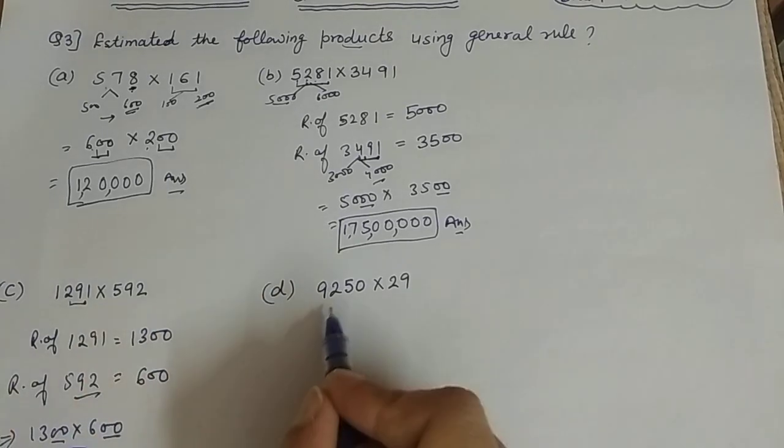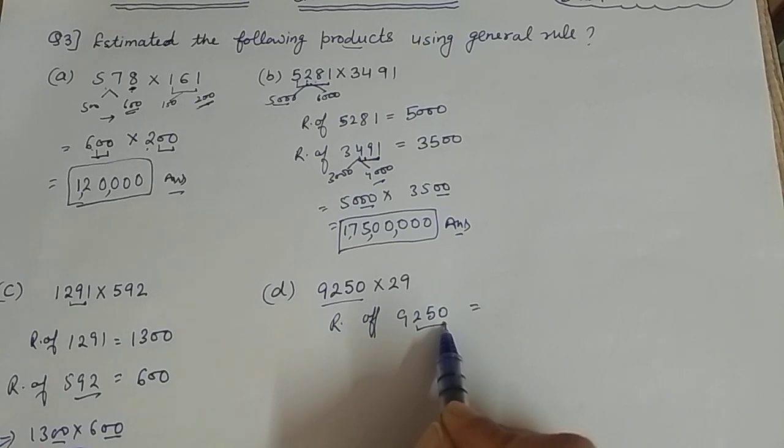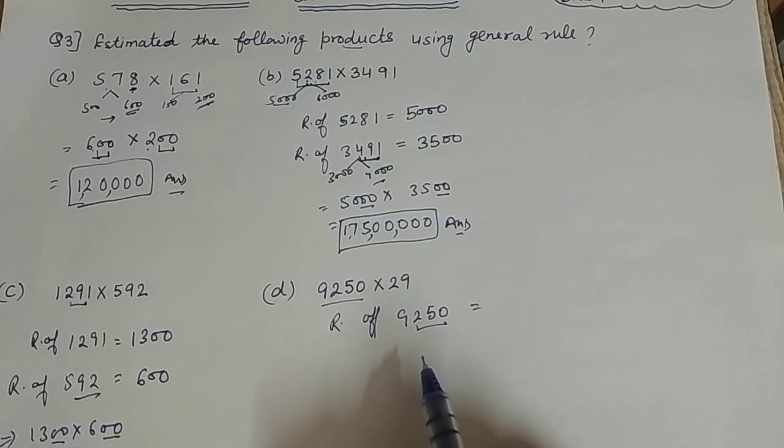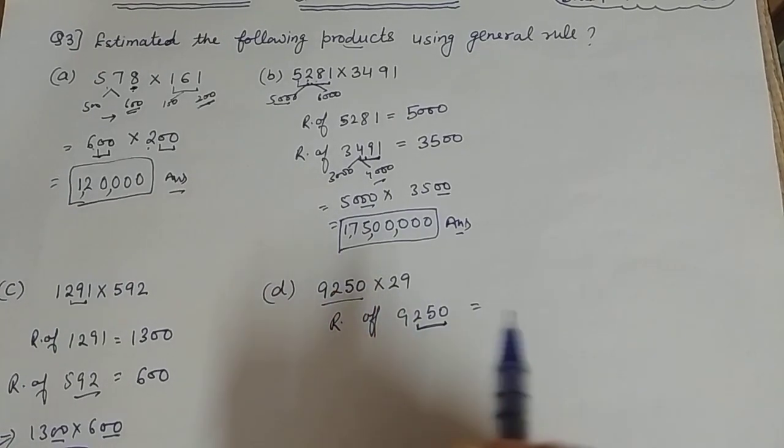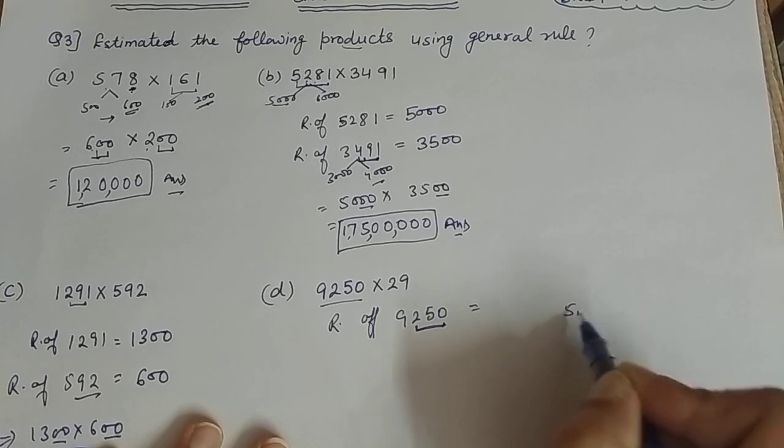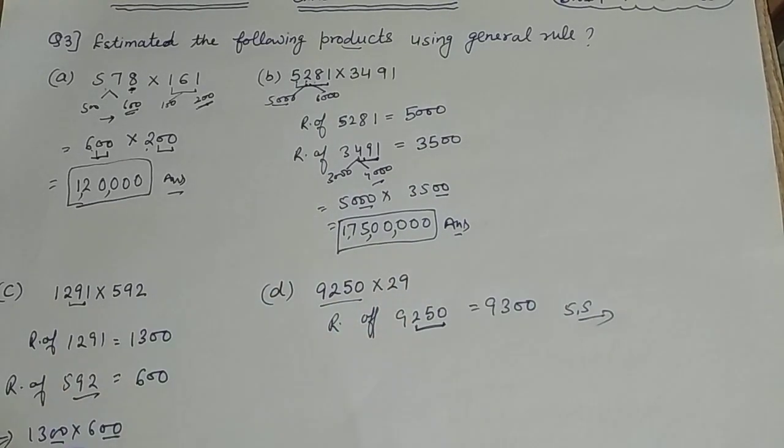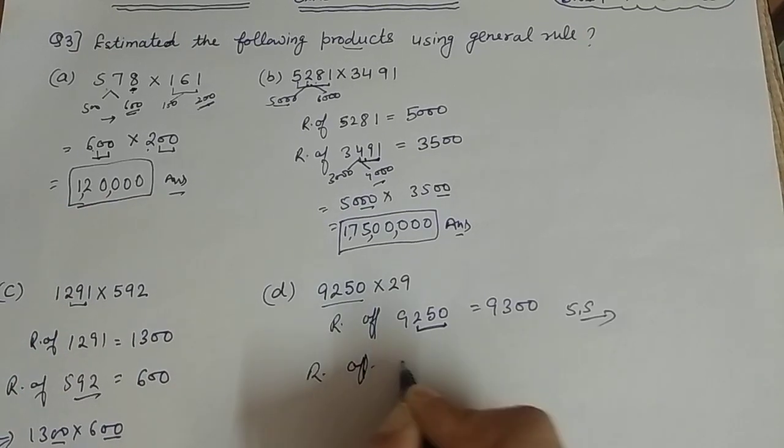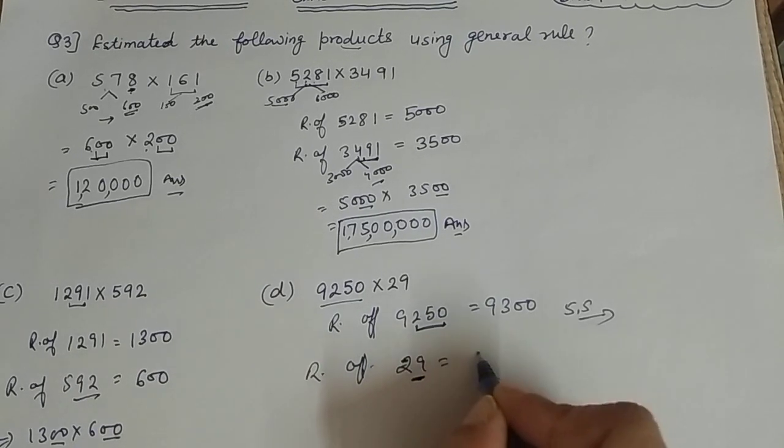Next, part D, we will round off 9,250. This is 250 or 500, it will go to 200 because it's more close. In thousands, this is 9,000 or 10,000. Here it's 250. I told you it will increase, so it will come like 250, it will increase. This rounding off is 9,300. Now let's round off 29 - it's 20 or 30. This is close to 30.